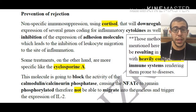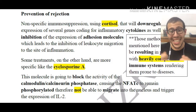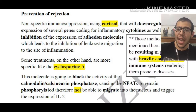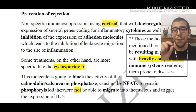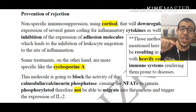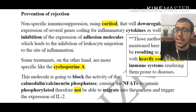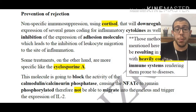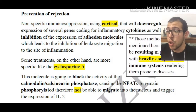Interleukin-2 is essentially going to give us lymphocytes, so this idea is very important. In the presence of cyclosporine A, it inhibits the effect of the calcineurin/calmodulin phosphatase, which eventually causes NFAT to remain phosphorylated. Therefore, it is not going to be able to migrate to the nucleus and will not trigger the expression of interleukin-2.